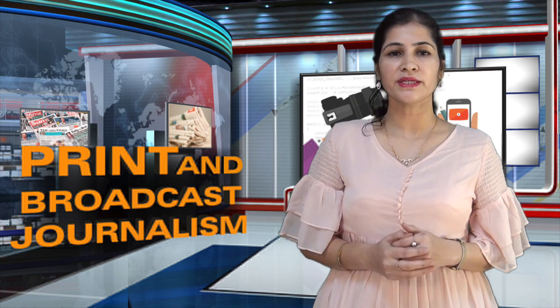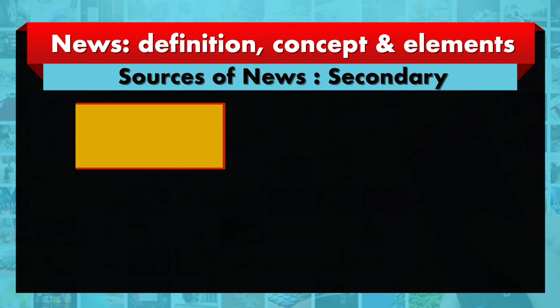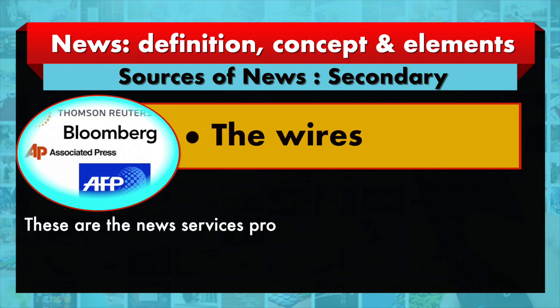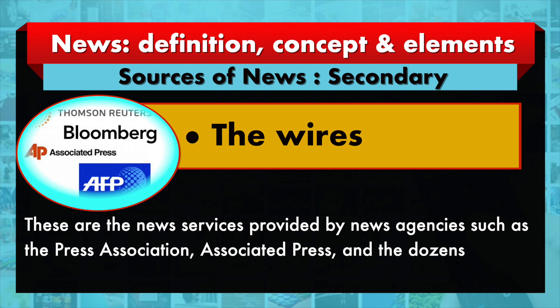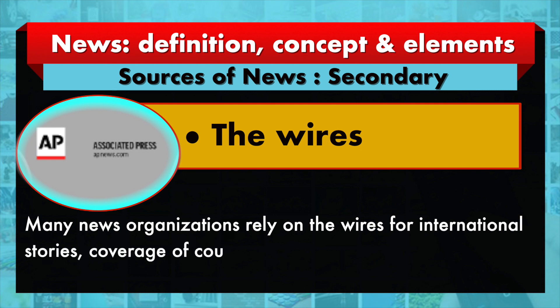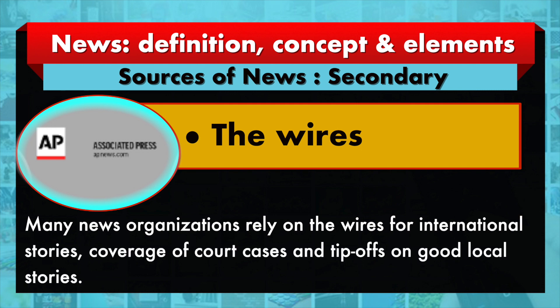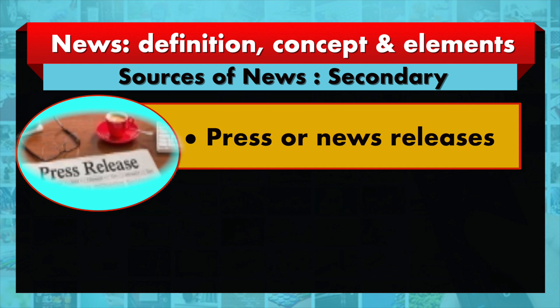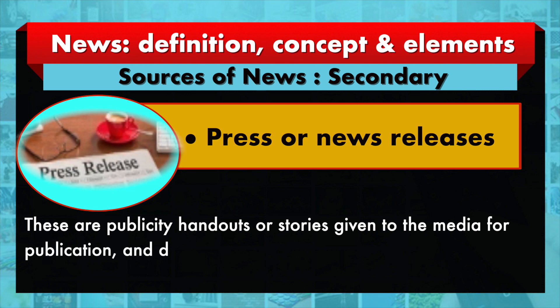There are five secondary sources. The first one is the wires — these are news services provided by news agencies such as the Press Association, Associated Press, and dozens of local news agencies. Many news organizations rely on the wires for international stories, coverage of court cases, and tips on good local stories.